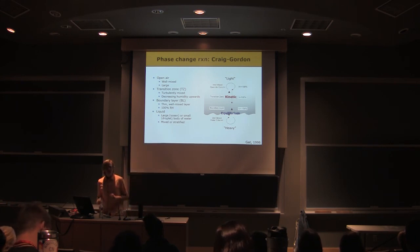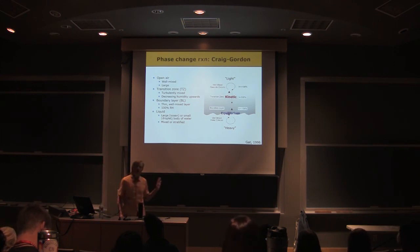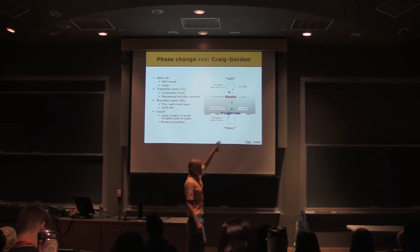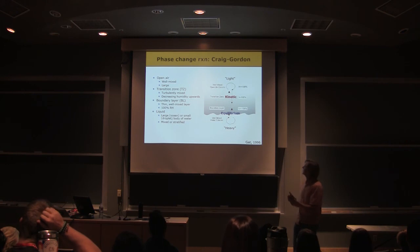Craig Gordon model basically solves for those two things. Alright, so the Craig Gordon model gives us a way of calculating, given this kind of scheme, what we would expect the isotopic composition of the evaporative flux to be out of the ocean.